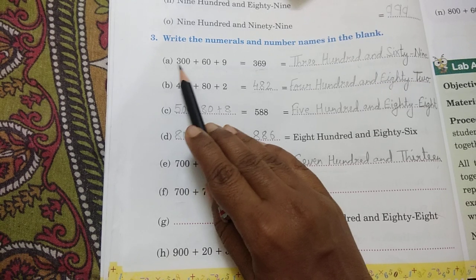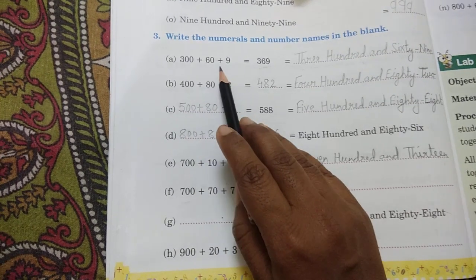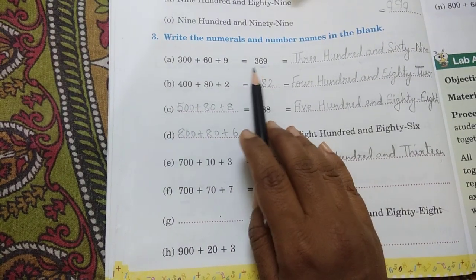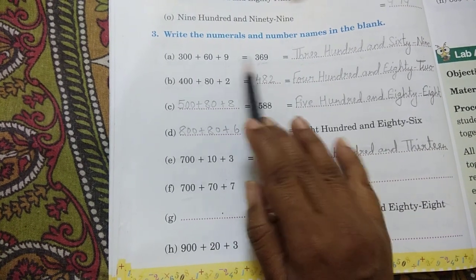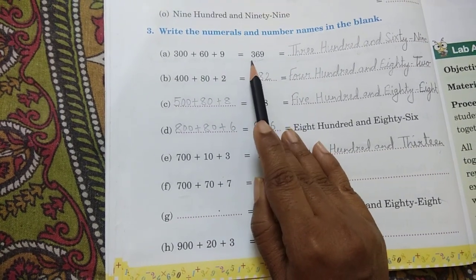See children, here you can see the numbers given in expanded form. Expanded means this number is 9, this number is 60, this number is 300.